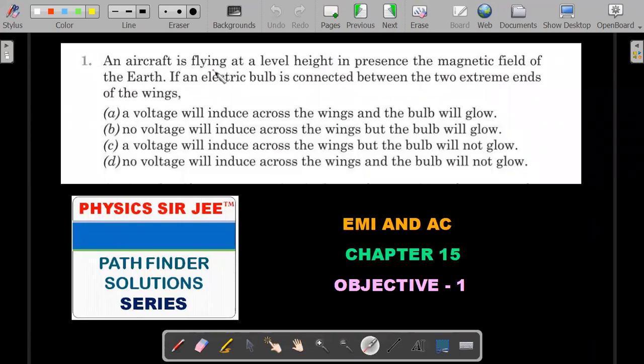An aircraft is flying at a level height in presence of the magnetic field of the Earth. If an electric bulb is connected between the two extreme ends of the wings: (a) a voltage will induce across the wings and the bulb will glow; (b) no voltage will induce across the wings but the bulb will glow; (c) a voltage will induce across the wings but the bulb will not glow; and the fourth obvious permutation which is (d) no voltage will induce across the wing and bulb will not glow. This was from objective number one of Chapter 15, EMI and AC.